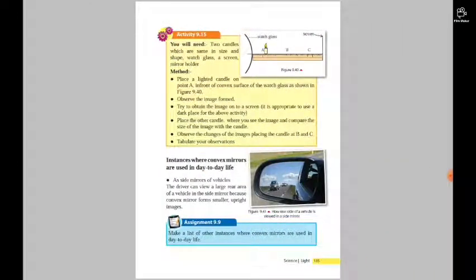You will need two candles which are the same in size and shape, watch glass, a screen, and a mirror holder. Place a lighted candle on point A in front of the convex surface of the watch glass as shown in Figure 9.40. Place the candle at positions A, B, and C and tabulate your observations. Try to obtain an image onto the screen, but we cannot actually.